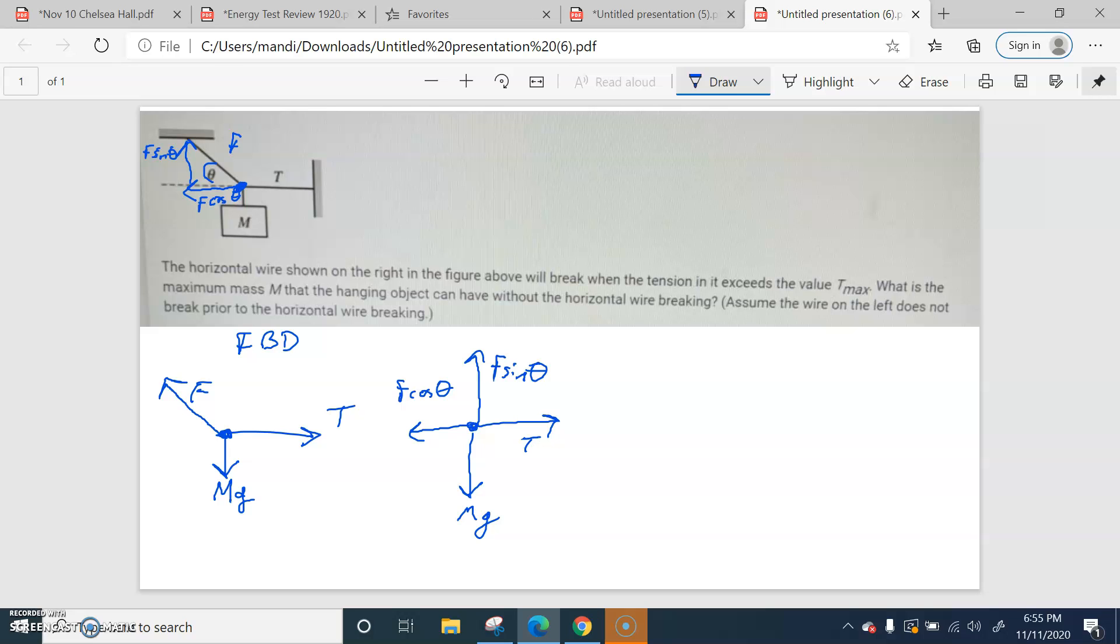And we're at equilibrium, so the ups and downs should balance, and the lefts and rights should balance. So F sine theta should equal mg, F cosine theta should equal T. And we're going to call this T max because the problem told us to.